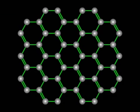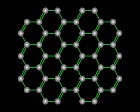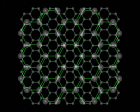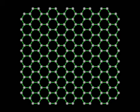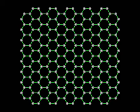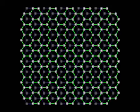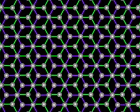Several different resonance structures can be drawn, depending upon the placement of the double bonds. In graphite, the carbon atoms are sp2 hybridized, with each carbon atom having a trigonal planar geometry. The atoms are connected to form a flat six-membered ring that extends indefinitely in two dimensions. The structure of graphite consists of layers of these infinite sheets stacked one on top of another. The layers do not lie immediately on top of one another, but instead are offset as shown here.